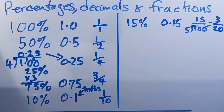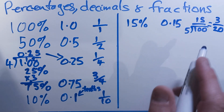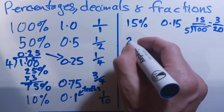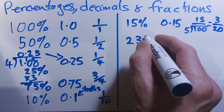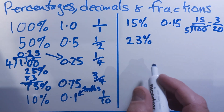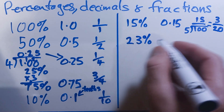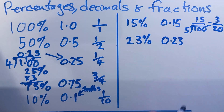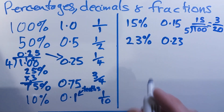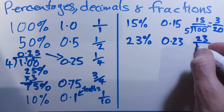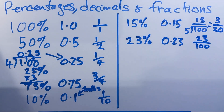And what you'll find is the more of these that you do, the more comfortable and familiar you'll get with some of the simplified versions as well. Now, if we've got something a little bit different, like 23%, the decimal should be nice — we just move the decimal point twice and say that's 0.23. And as a fraction, we would just write it as 23 over 100. We don't need to simplify that any further.